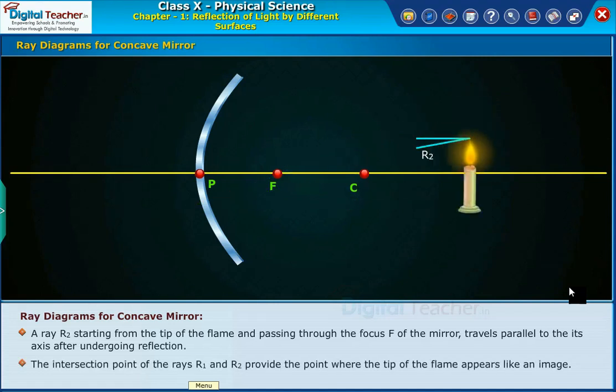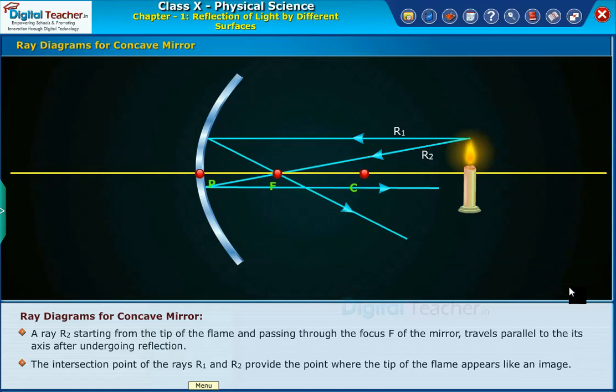The intersection point of the rays R1 and R2 provides the point where the tip of the flame appears like an image.